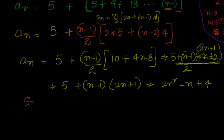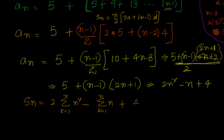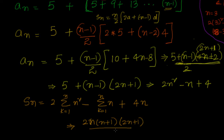We have aₙ = 2n² - n + 4. So Sₙ is nothing but the summation: 2 × Σ(k=1 to n) k² minus Σ(k=1 to n) k plus 4 added n times, which gives 4n. This equals 2 × n(n+1)(2n+1)/6 minus n(n+1)/2 plus 4n.